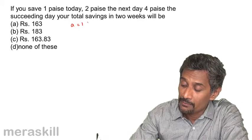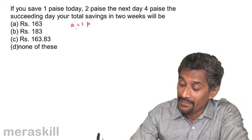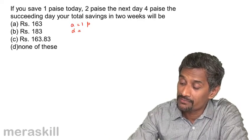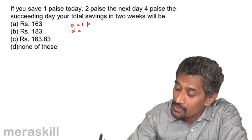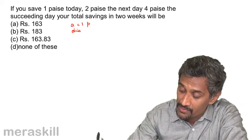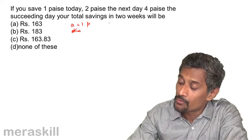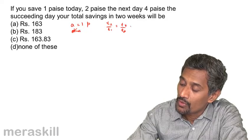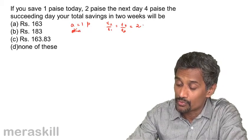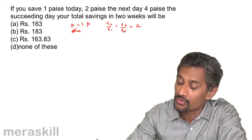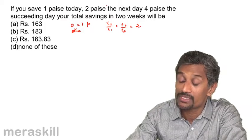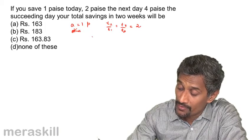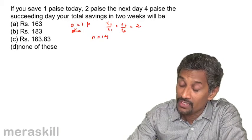At first it might seem like an AP with a = 1 paise, but checking the ratios: t2/t1 = 2, t3/t2 = 2 — so this is definitely a GP with r = 2. Total savings in two weeks means n = 14.